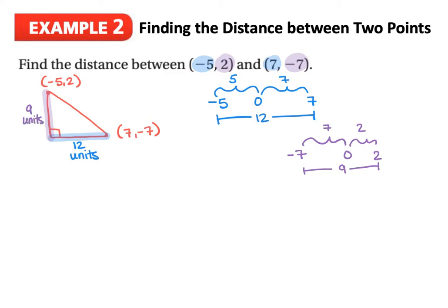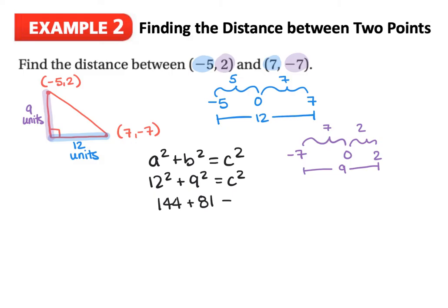Now I know the length of both my legs, so I can use Pythagoras' Theorem to figure out how far away my two points are. I've got a squared plus b squared is equal to c squared: 12 squared plus 9 squared is equal to c squared, so 144 plus 81 is equal to c squared, giving us 225 equals c squared. Taking the square root of both sides, c is equal to 15 units.